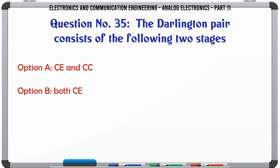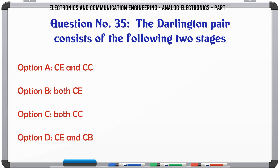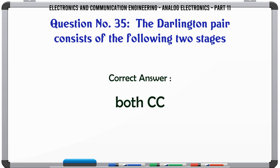The Darlington pair consists of the following two stages. A. CE and CC. B. Both CE. C. Both CC. D. CE and CB. The correct answer is: Both CC.